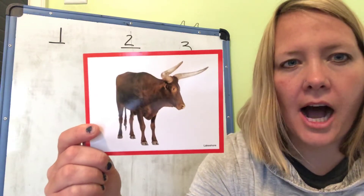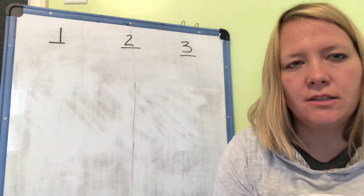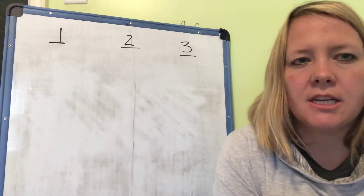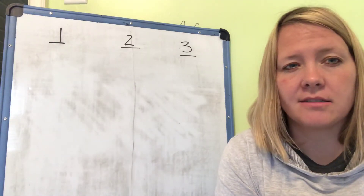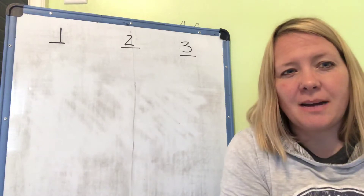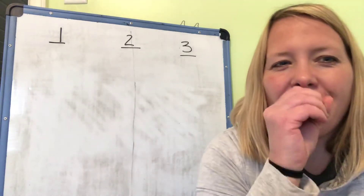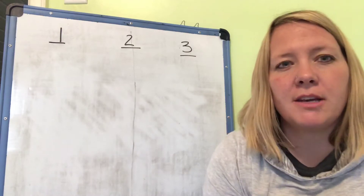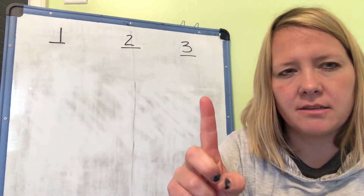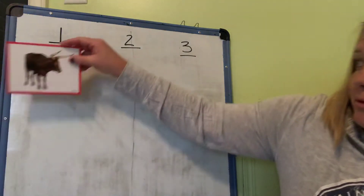Can you say ox? Ox. Here we go. Syllables, syllables, one, two, three. Break words into parts with me. Say it with me — ox. Clap it with me — ox. Stomp it with me — ox. Whisper it with me — ox. Count it with me — ox. How many syllables are in the word ox? One. I'll hang it under the number one.